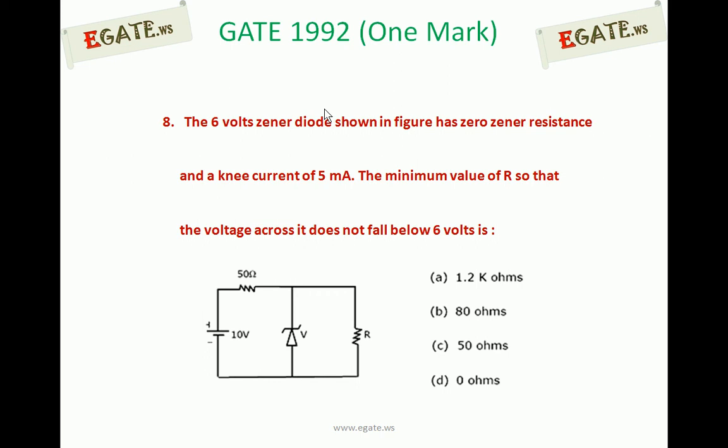The 6V Zener diode shown in figure has zero Zener resistance and a knee current of 5 mA. The minimum value of R so that the voltage across it doesn't fall below 6V. Options: (a) 1.2 kΩ, (b) 80Ω, (c) 50Ω, (d) 0Ω.